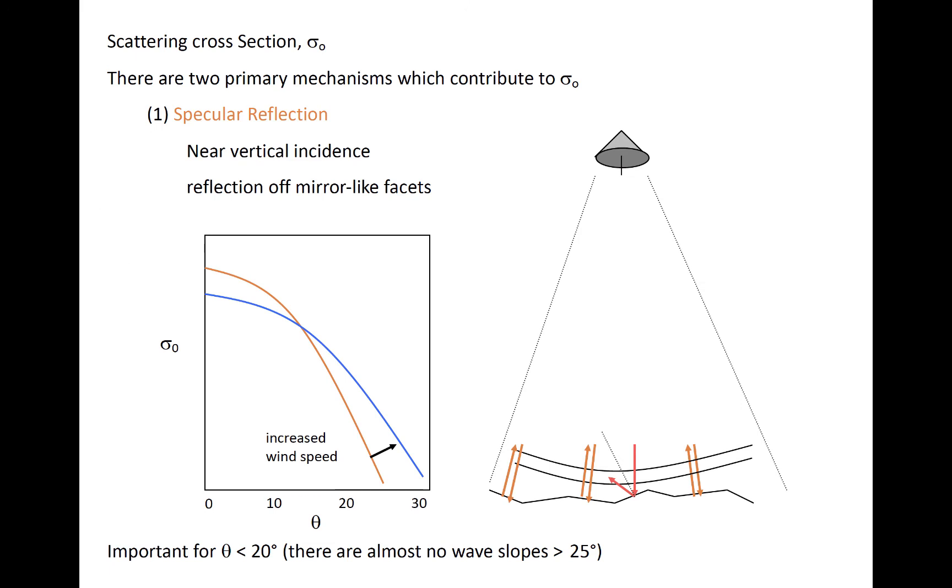There are two primary types of scattering that impact sigma nought very differently. The first is called specular reflection. It is mirror-like, and occurs when the sea state is very calm. It dominates when the incidence angle, or the angle of zenith, of the transmitted radiation on the sea surface is less than about 15 to 20 degrees.